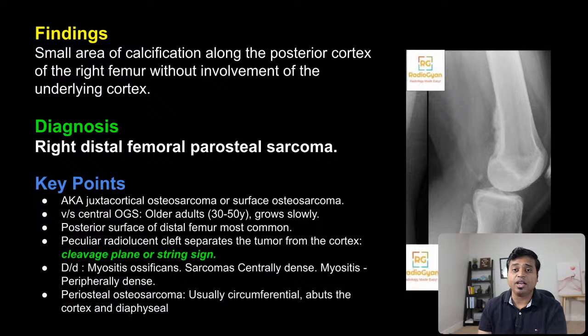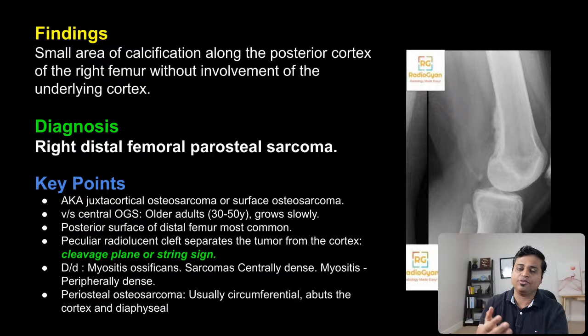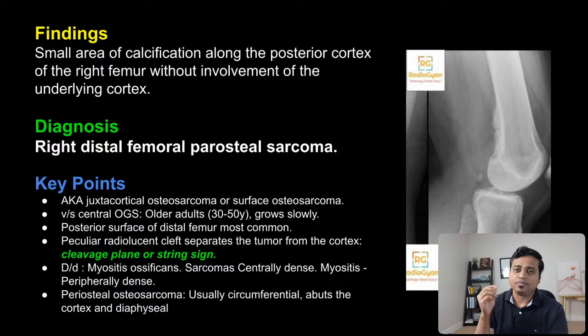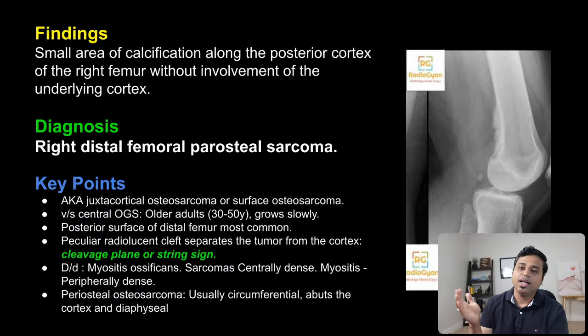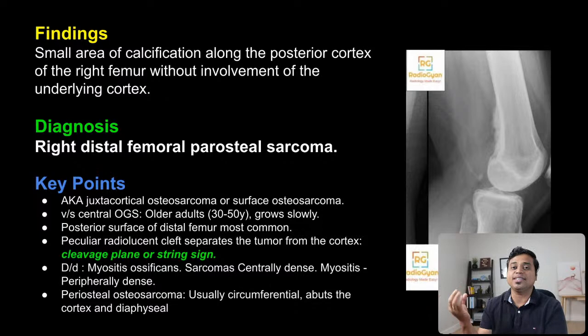An important differential commonly asked in exams is how to distinguish parosteal osteosarcoma from myositis ossificans. In most cases it's easier to distinguish — myositis ossificans is not that close to bone — but sometimes it may be closer to the bone cortex and difficult to differentiate. Remember: sarcomas centrally calcify and are peripherally less dense, whereas myositis ossificans is peripherally dense and centrally less dense. A mnemonic: sarcomas sound like 'central,' so calcification in sarcomas is central.